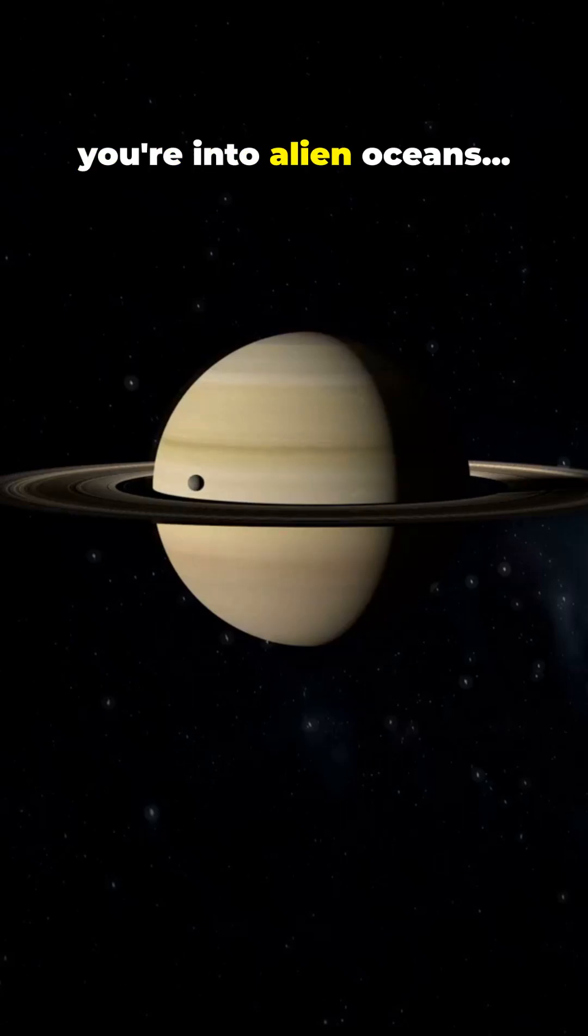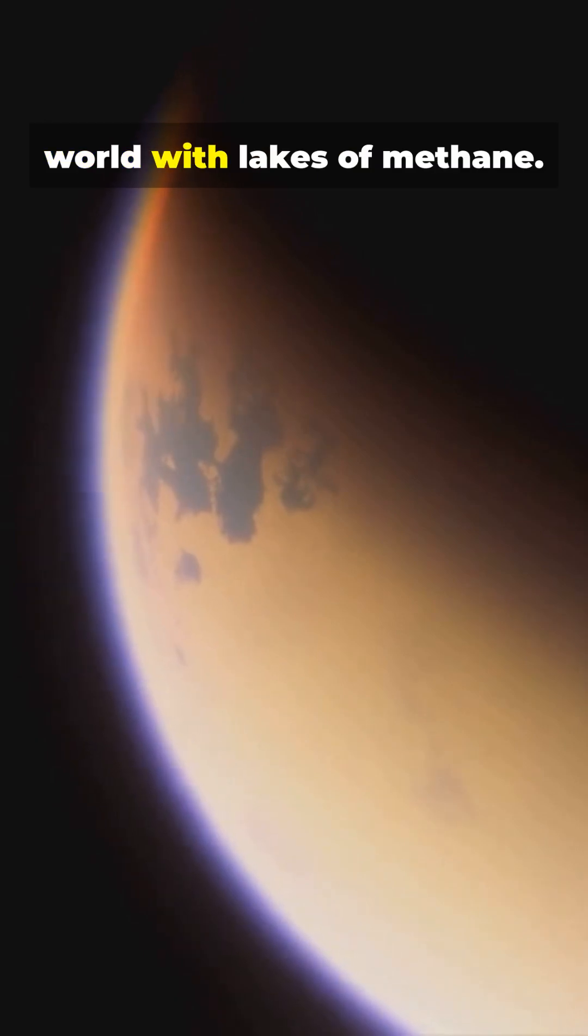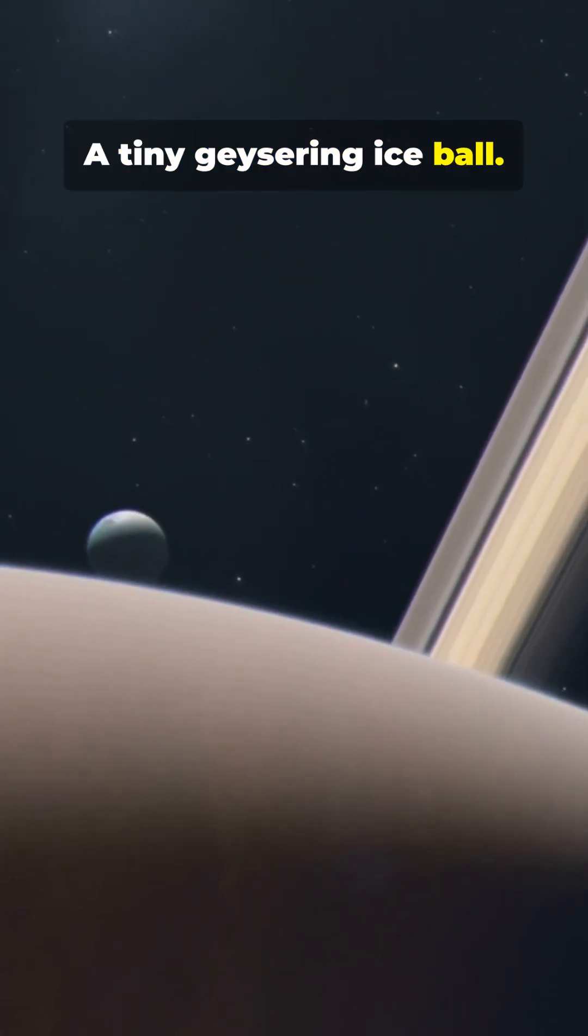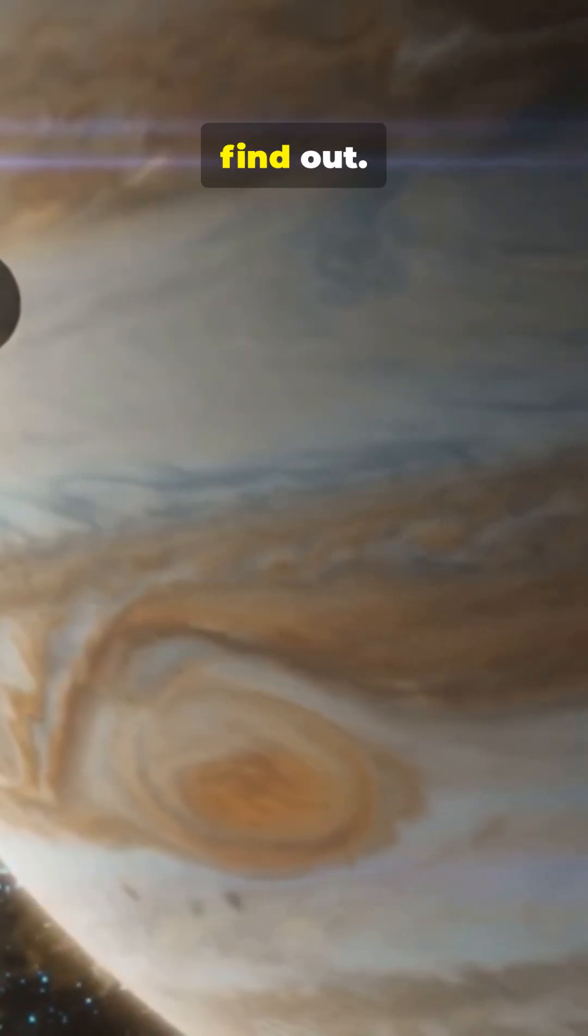You need to hear this if you're into alien oceans. Titan is a thick atmosphere world with lakes of methane. Enceladus? A tiny geysering ice ball. Which one could hide life? Let's split the screen and find out.